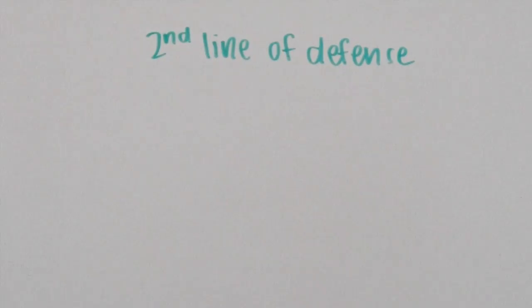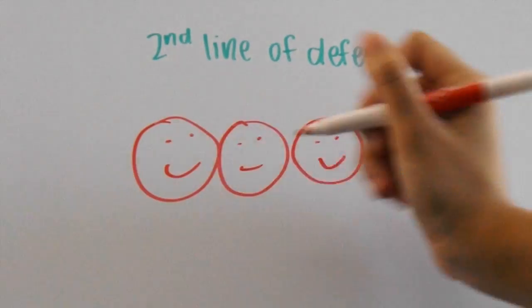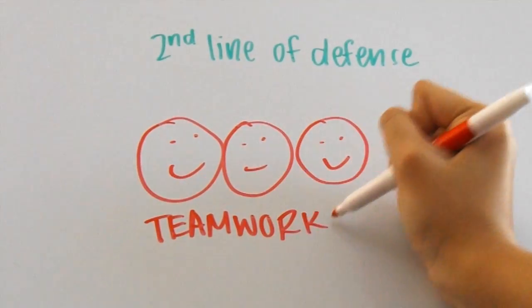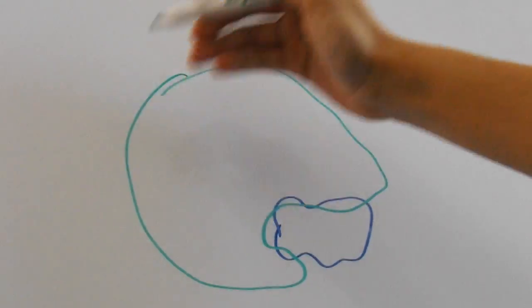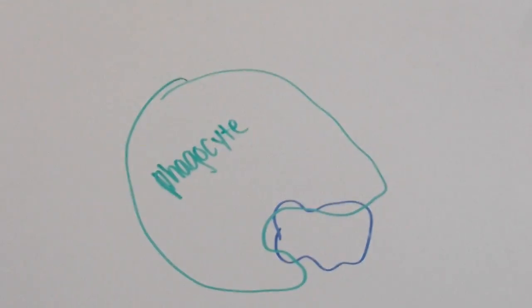The second line of defense includes different types of cells that work together in order to eliminate any nonspecific substance. One type of cell might be a phagocyte, which engulfs bacteria and breaks bacteria down.